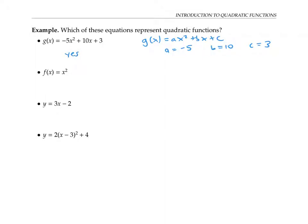The second equation is also a quadratic function, because we can think of it as f of x equals one times x squared plus zero times x plus zero. So it is in the right form, where a is one, b is zero, and c is zero.